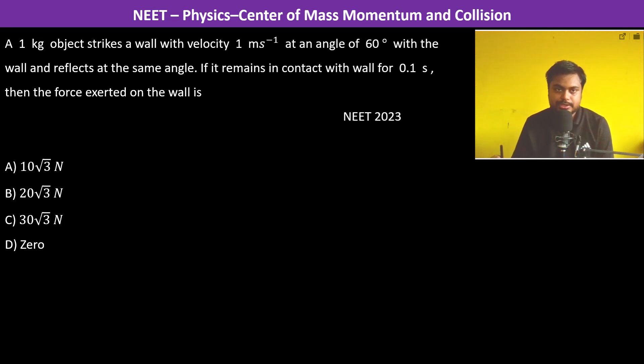A 1 kg object strikes a wall with a velocity of 1 meter per second at an angle of 60 degrees with the wall. So this is the wall and this object, 1 kg, and it is traveling.